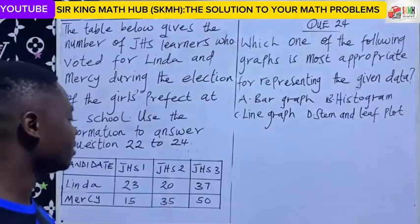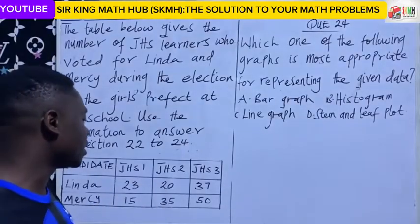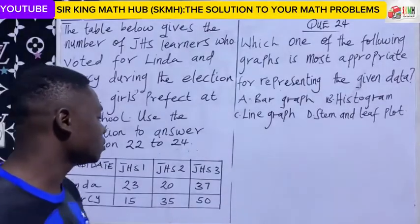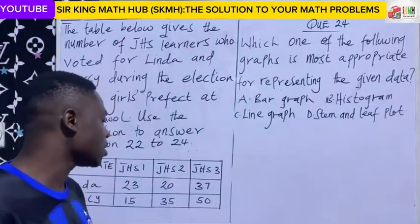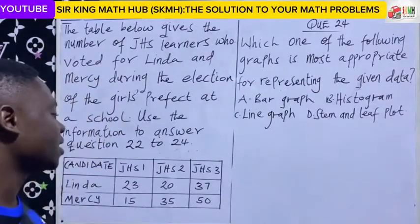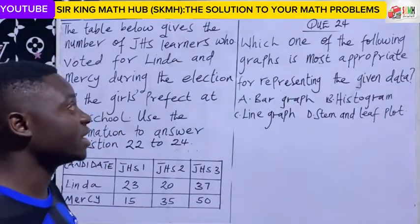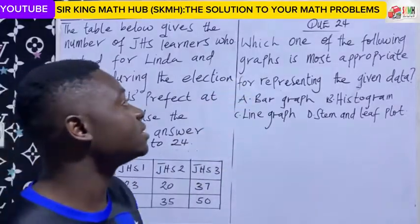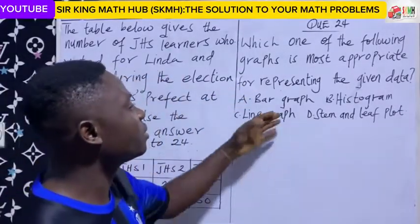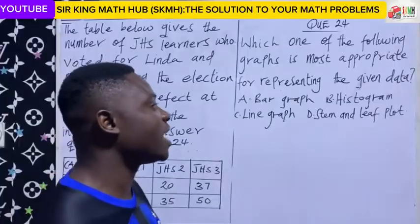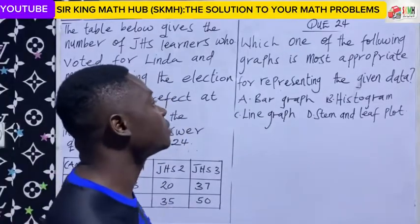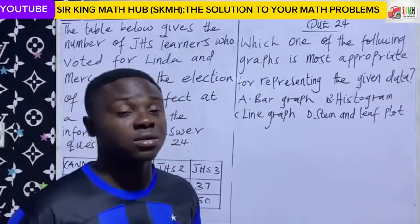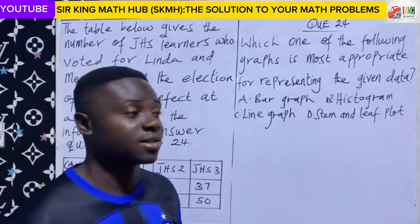And these are the number of votes each candidate amassed at the end of the election. But for question 24, the question says: which of the following graphs is most appropriate to represent the given data? So clearly, this question is under statistics.